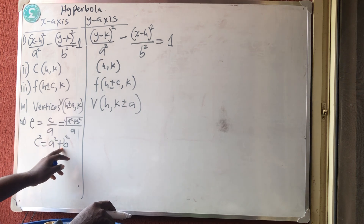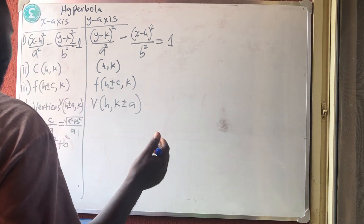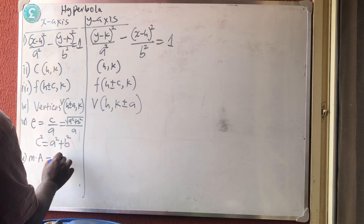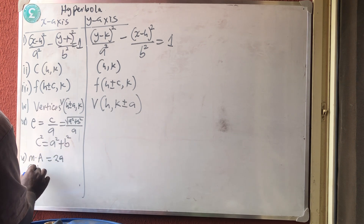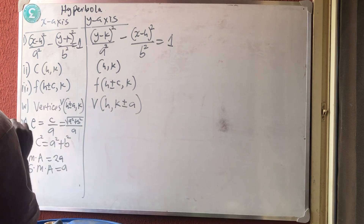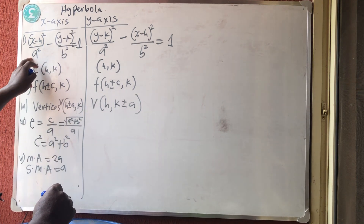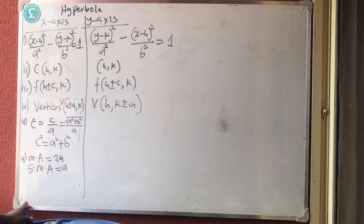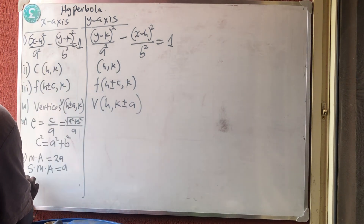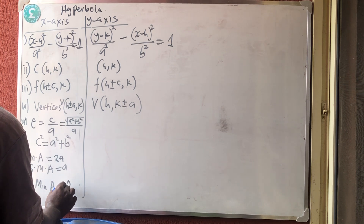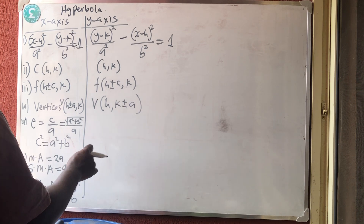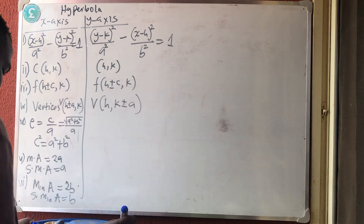The major axis = 2a and the semi-major axis = a itself — that is the larger one, the positive side. The minor axis = 2b and the semi-minor axis = b. This doesn't change from ellipse.